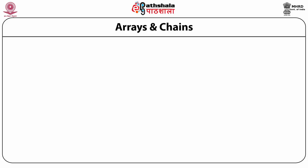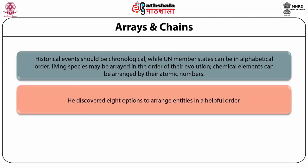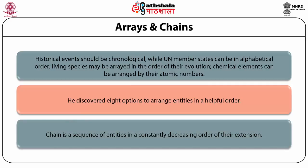Rules for array arrangement include: historical events should be in chronological order; UN member states may be in alphabetical order; living species in order of their evolution; and chemical elements by atomic number. Ranganathan discovered eight options to arrange entities in a helpful order. A chain is a sequence of entities in a constantly decreasing order of their extension — moving from general to specific — where members are always of unequal rank.